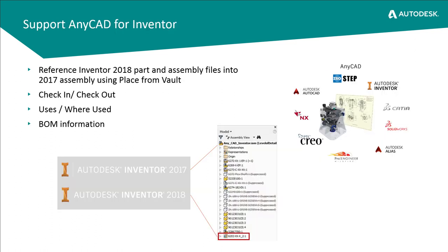Inventor has added some more AnyCAD support, and along with that AnyCAD support, Vault has also made some enhancements to support that workflow and the necessity of using different CAD product files. We showed this by an example of using Inventor 2018 and 2017 together. You might be referencing a 2018 assembly but using Inventor 2017, and Vault will know this information as you check in and check out. The Where Used and Uses tab is updated. We fully support this in 2018, so you can have a mixture of both Inventor 2018 and 2017 assemblies.